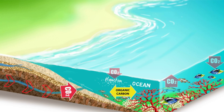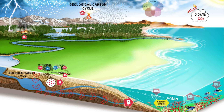Carbon released to the atmosphere is greater in regions of oceanic upwelling, where dense, cooler, and nutrient-rich water is brought to the surface, replacing the warmer, usually nutrient-depleted surface water.